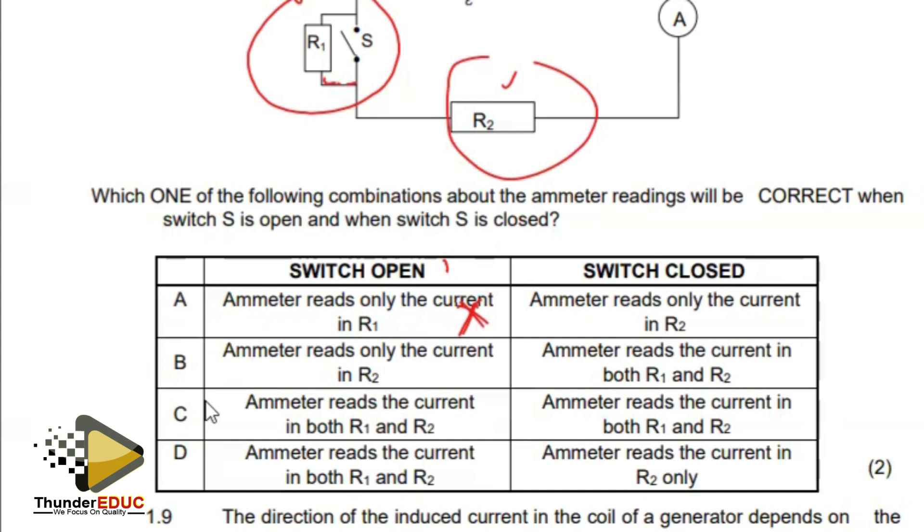Ammeter reads only the current in R2 - that is also wrong because it's both. Ammeter reads the current in both R1 and R2, which is a correct statement. Let's look at this side if we close it. If we close the switch, ammeter reads the current in R1 and R2 - no, it's not going to. Because now, the moment you close the switch, there is no resistance here. There is resistance this side. So the current will just go straight through via that channel. Which means the only current or the only resistor to focus on is R2. So option D is the best.